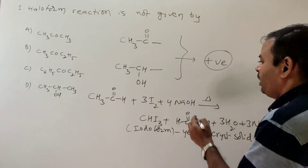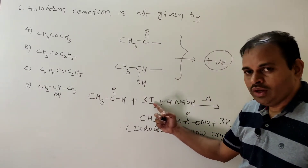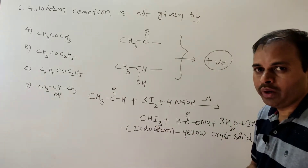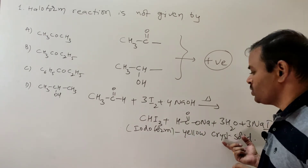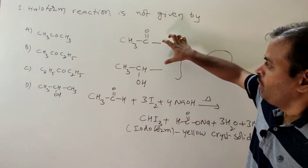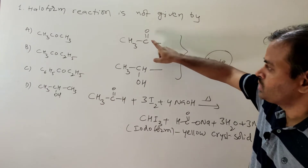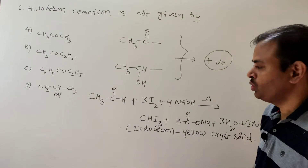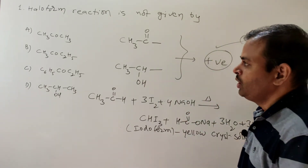If chlorine is used, it gives chloroform (CHCl3); if bromine is used, it gives bromoform (CHBr3). Both chloroform and bromoform are liquids, but iodoform is a yellow crystalline solid. Carbonyl compounds having the CH3CO group or alcohols having the CH3CHOH group only give a positive test for haloform reaction.